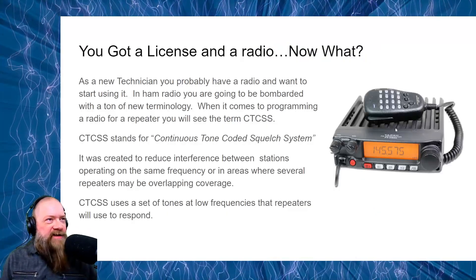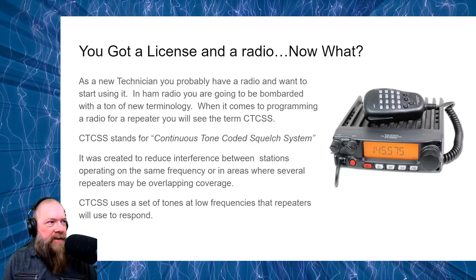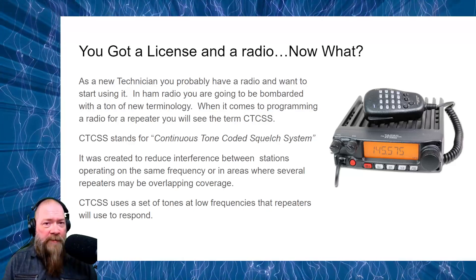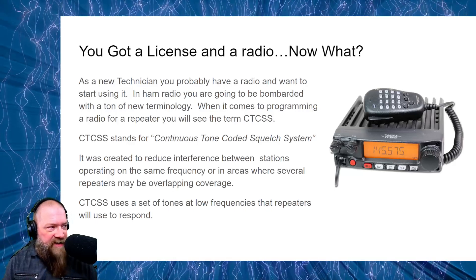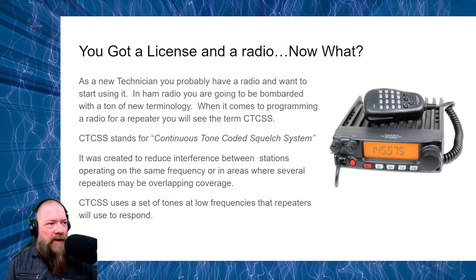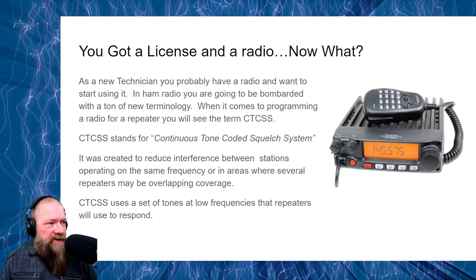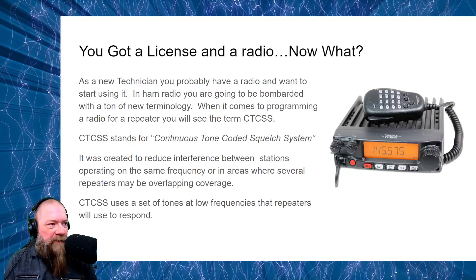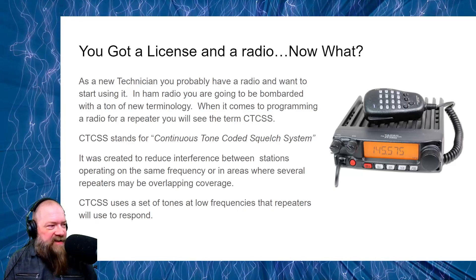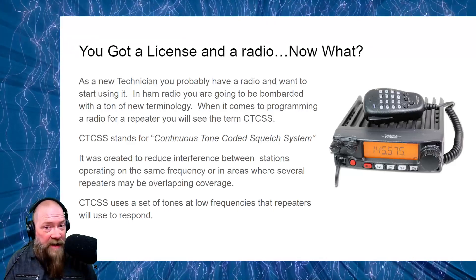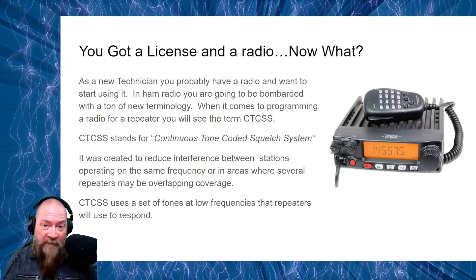Okay, so you got a license and a radio — now what? Well, as a new tech, you probably have a radio and want to start using it. In ham radio, you're going to be bombarded with tons of new terminology. When it comes to programming a radio for a repeater, you're going to see the term CTCSS. CTCSS stands for Continuous Tone Coded Squelch System — that is a mouthful, don't say that five times. It was created to reduce interference between stations operating on the same frequency, or in areas where several repeaters may have overlapping coverage.